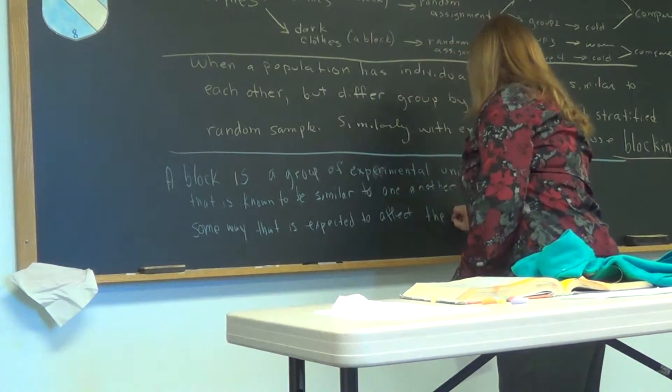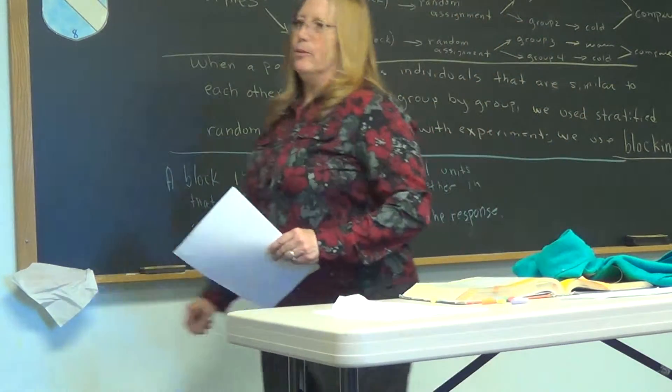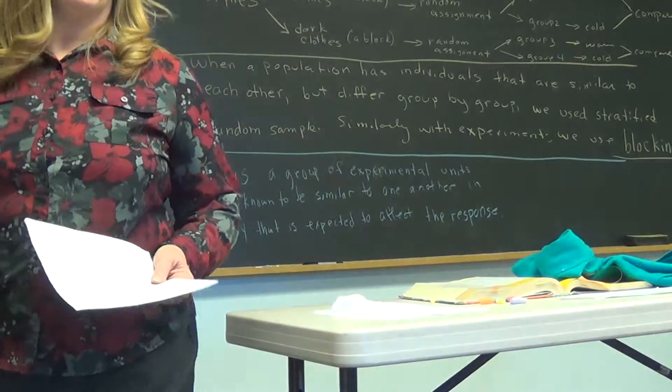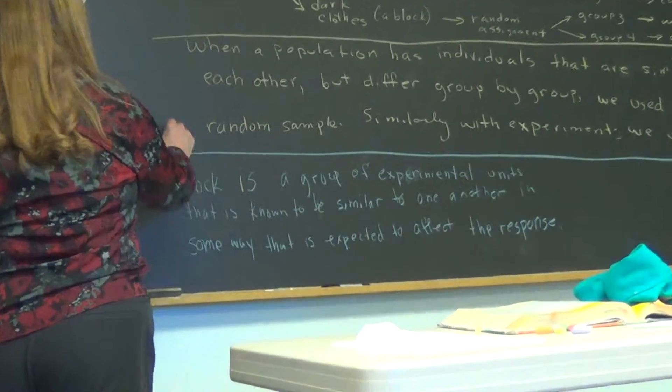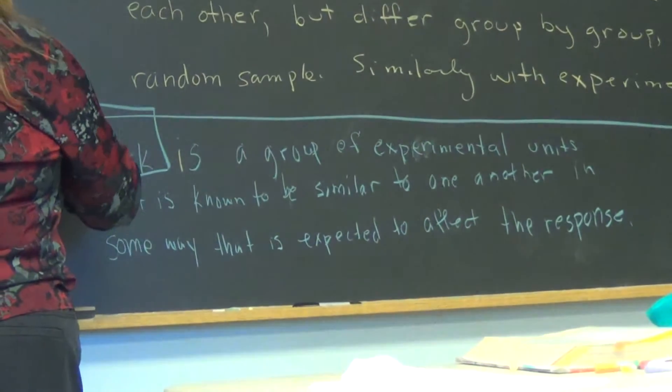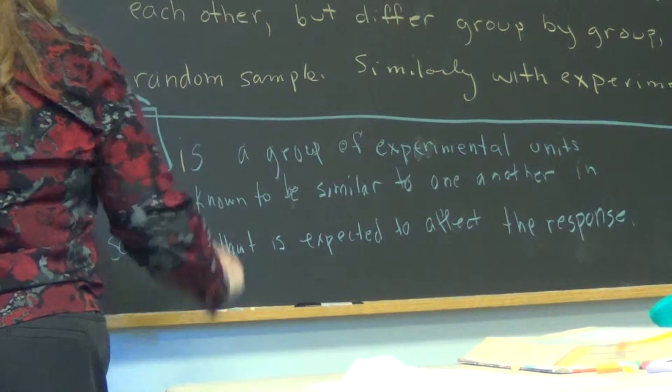So basically it's just strata, right? It is, but strata is for random sampling and blocking is for experiments. You're doing the same thing, just for different reasons. So if you understand stratified random samples, you understand blocking.